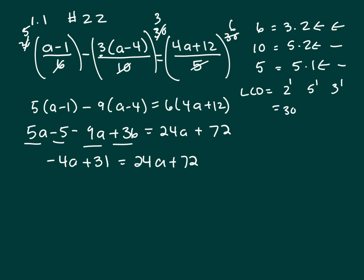Now let's add 4a to both sides, and that will give me 28a plus 72. Now subtract 72 from both sides. That will give me negative 41 equals 28a. Now divide both sides by 28. I get negative 41 over 28 equals a.